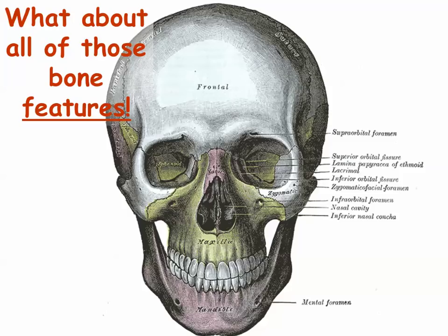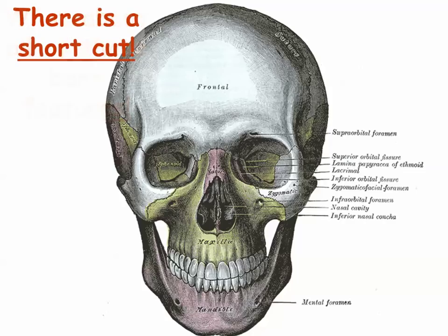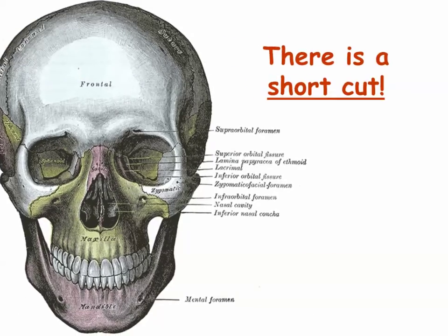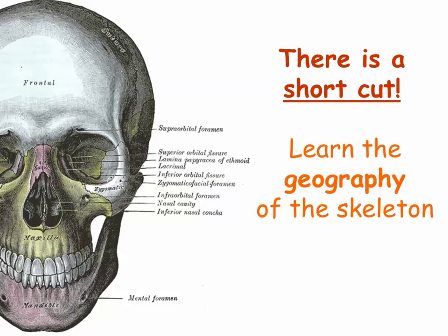But wait! Now I sound like I'm in an infomercial. What about that additional list of structures you need to learn? All those parts of each bone, like the supraorbital foramen or the superior orbital fissure. Don't worry — there's a shortcut for this too. In fact, it's just a variation of the same shortcut I've been talking about all along: pay attention to the literal meaning of each name. Specifically, I suggest that you start by learning the geographical terminology used in the names of skeletal features.